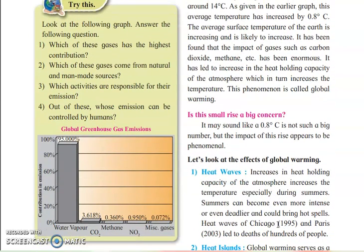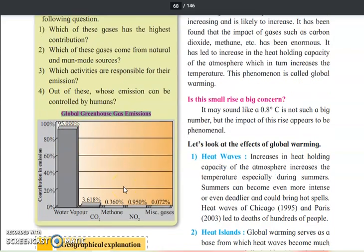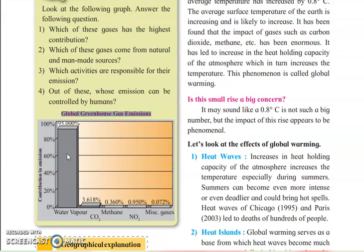Now look at the next graph, which is totally based on global greenhouse gas emissions. You can see gases like carbon dioxide, methane, nitrogen oxide, and miscellaneous gases, along with their contribution to emissions — how much each gas is released into the atmosphere. Looking at this graph, water vapor has the highest contribution, and CO2 is the gas with the highest contribution among man-made sources.